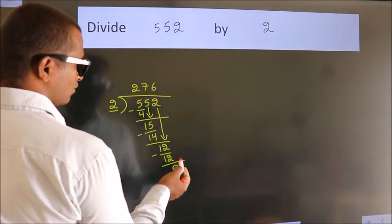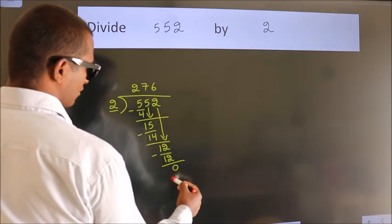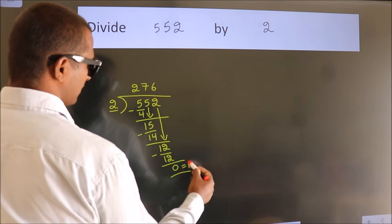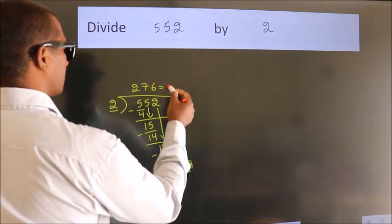No more numbers to bring down, so we stop here. This is our remainder, and this is our quotient: 276.